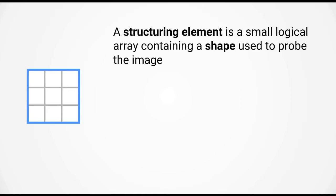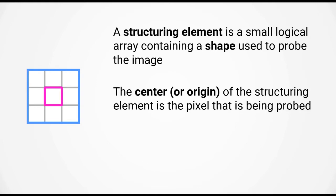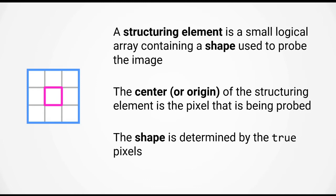Let's have a look at how morphological operations work. Morphological operations use a structuring element, which is a small logical array that contains the shape used to probe the image. The center of the structuring element is called the origin and indicates the pixel that is being probed. I'm going to indicate the origin with a magenta outline. The shape of the structuring element is determined by the true pixels. In this first example, the structuring element consists of a 3x3 array of true pixels, so this shape would be a square.